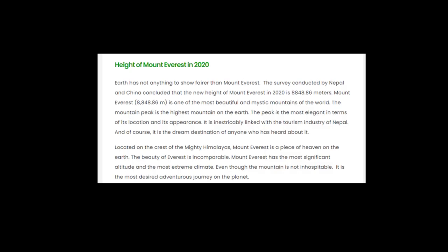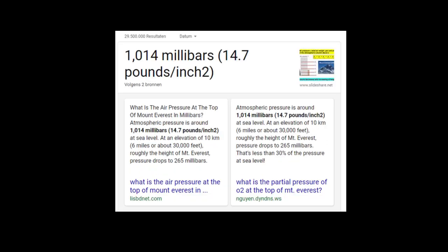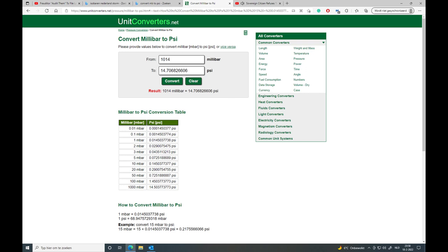Mount Everest is 8.85 kilometers high. The average atmospheric pressure at ground level is 1014 millibars, that is 14.7 psi. The average atmospheric pressure at the top equals 265 millibars, that is 3.84 psi. The difference in atmospheric pressure therefore is 10.86 psi.